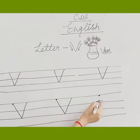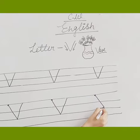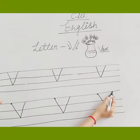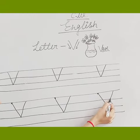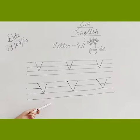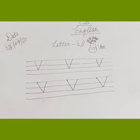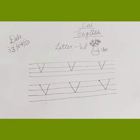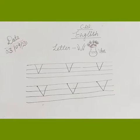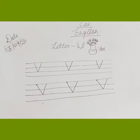Once again, start from the dot and draw a slanting line to the bottom line. Then we will draw another slanting line in the same way. So kids, in the same way, you have to complete letter V in your English notebook. This is your today's work.